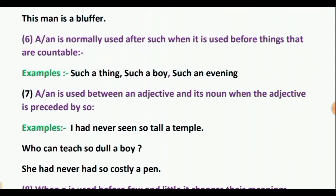Rule 7: A or AN is used between an adjective and its noun when the adjective is preceded by 'so.' Examples: 'I had never seen so tall a temple.' 'Who can teach so dull a boy?' 'She had never had so costly a pen.'